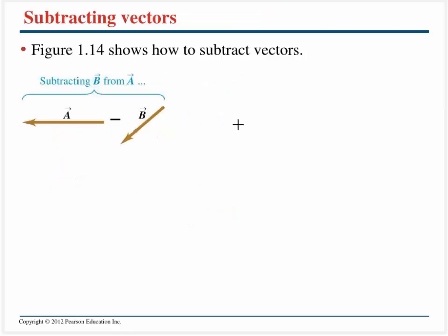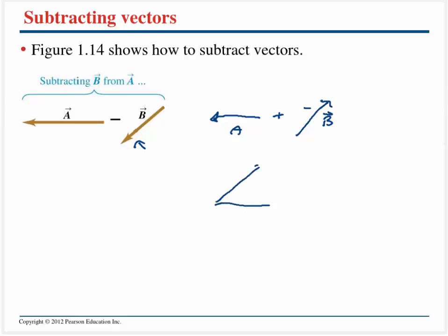Adding is pretty easy. What happens if I want to subtract? Here I've got vector a and I want to subtract vector b. Essentially, all I'm doing is adding a negative vector b. I take b, reverse it, and add those together — my resultant vector goes off in the corresponding direction.